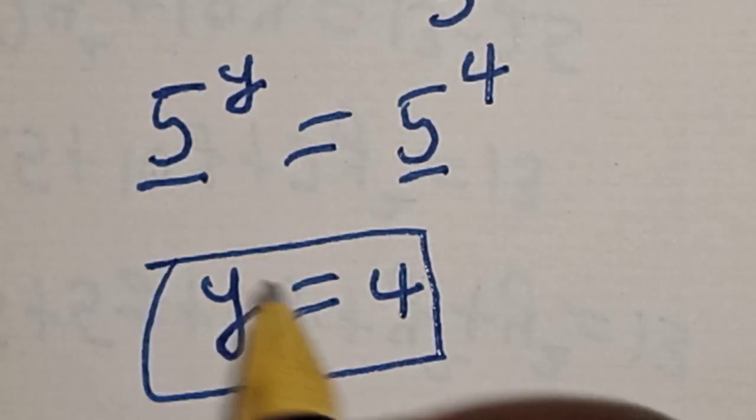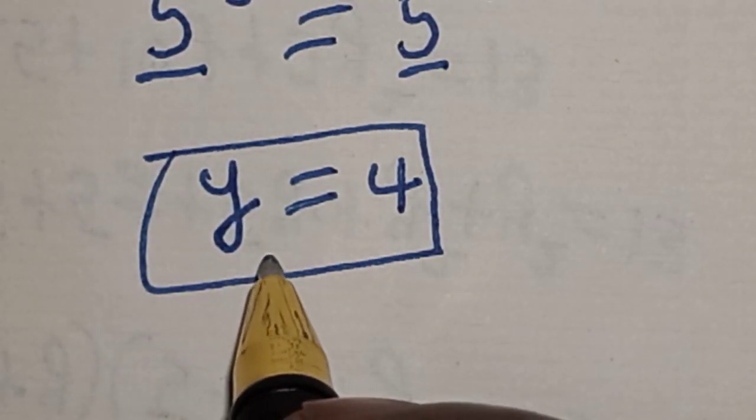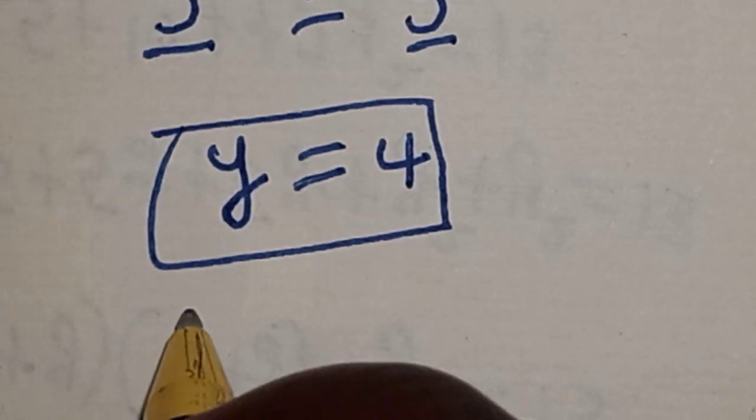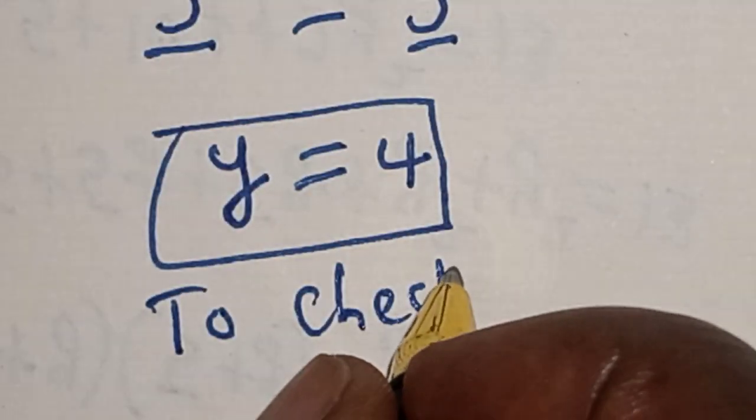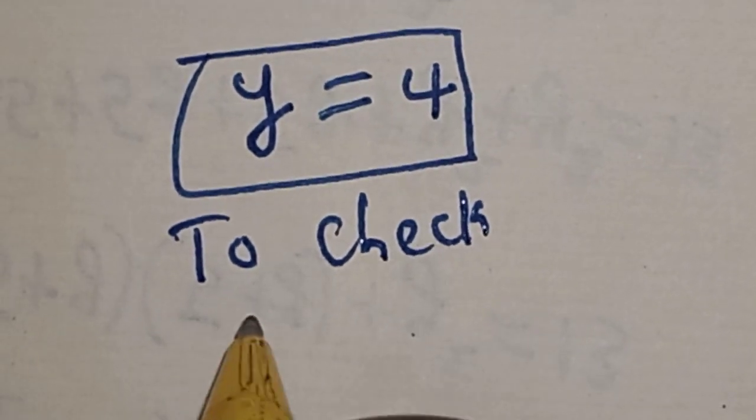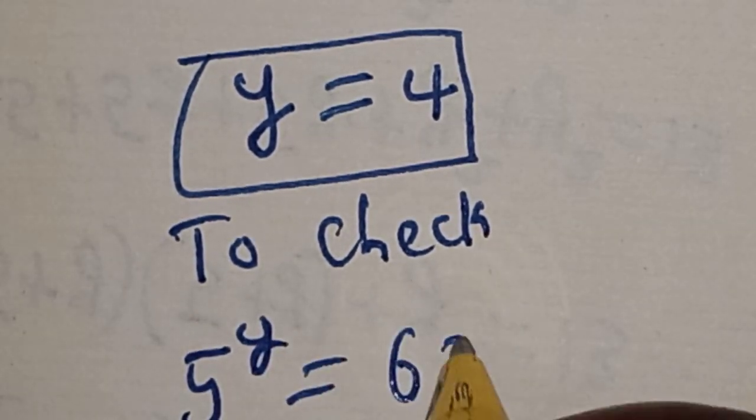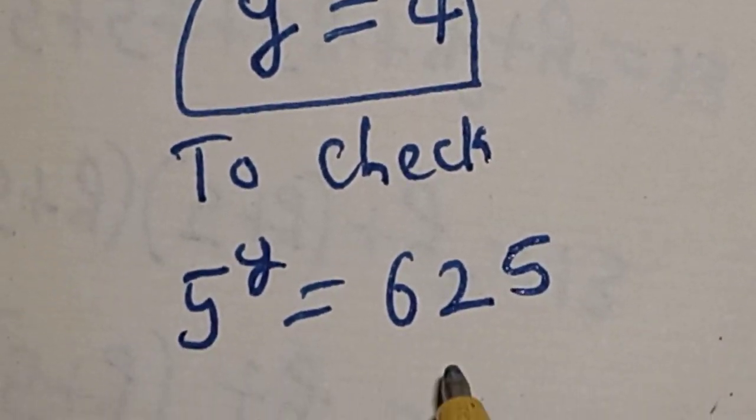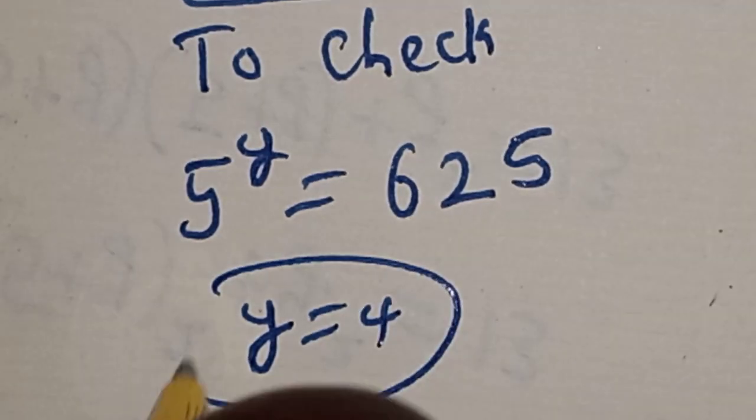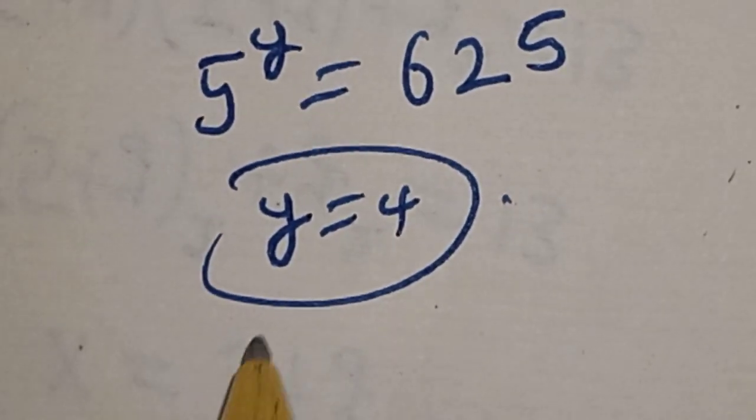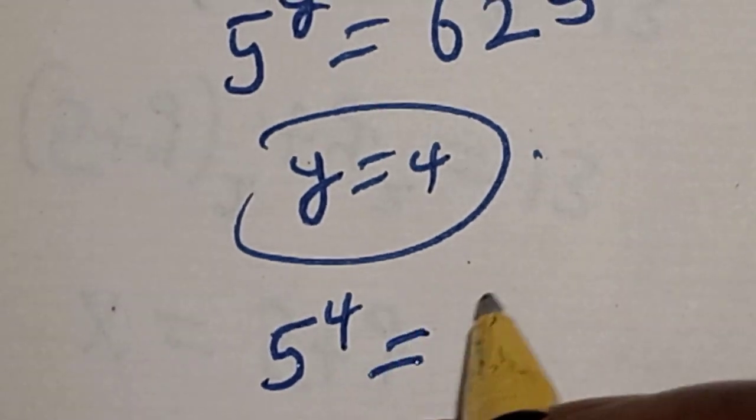Let's check to confirm if the answer is correct or not. To check: 5 raised to power y is equal to 625, then y is equal to 4. 5 raised to power 4 is equal to